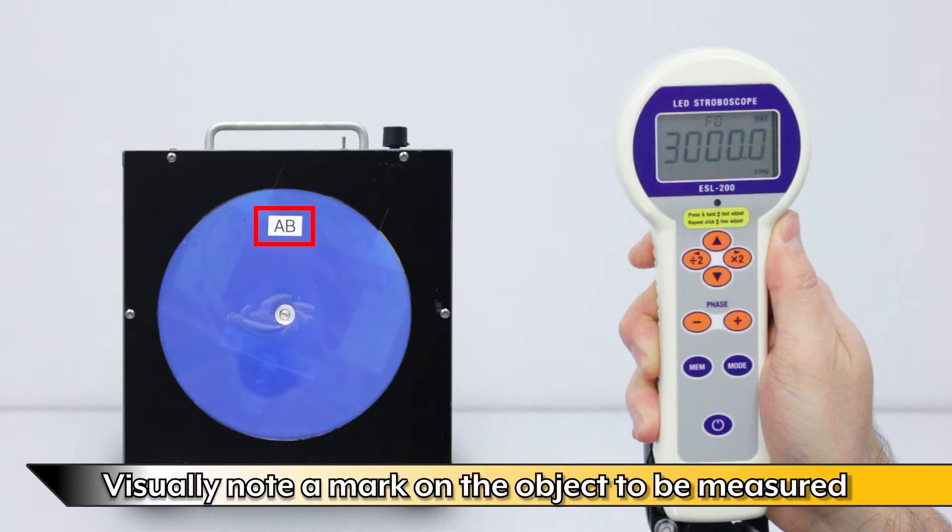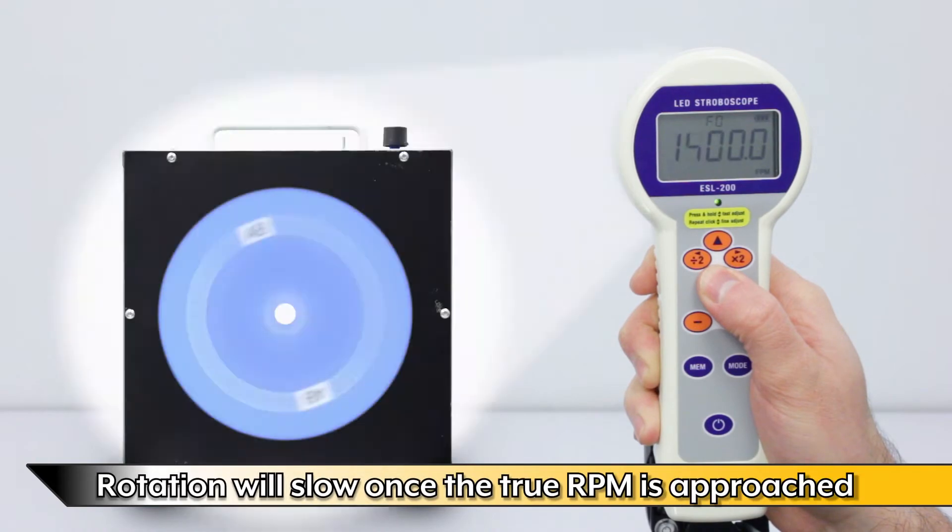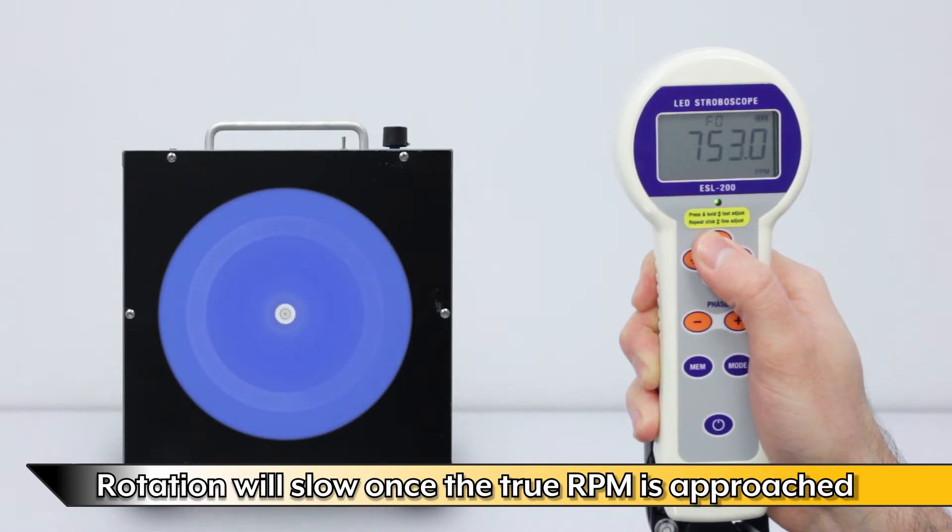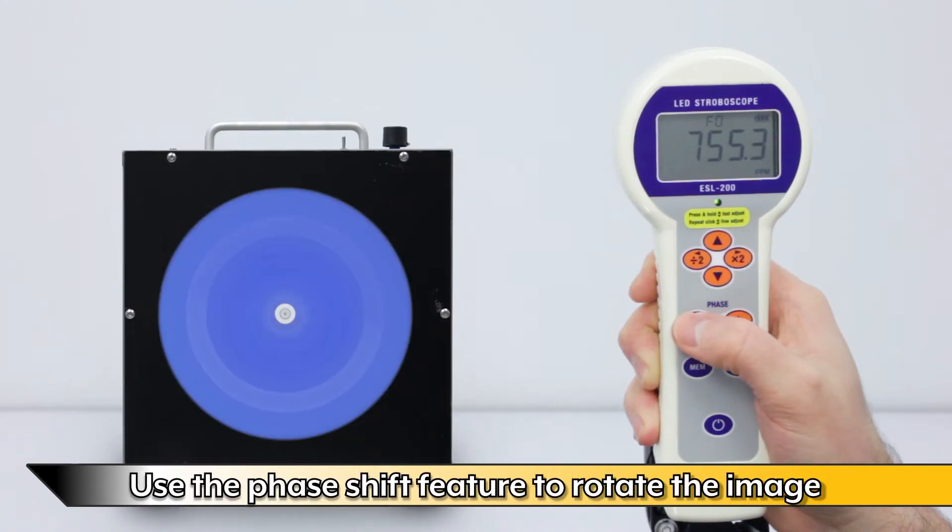Visually note a mark on the object to be measured. Lower the flashes per minute until one mark appears. Rotation will slow once the true RPM is approached. Once true RPM is achieved, the mark will remain stationary.